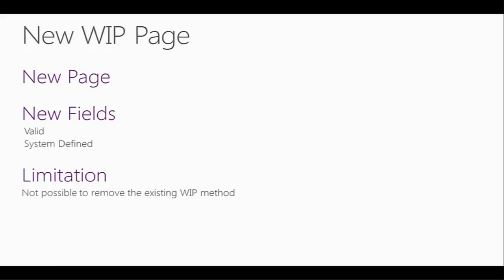New WIP page and new WIP method creation. In Dynamics NAV 2013, we have a new page. In this new page, the five WIP methods are already created. New fields have been added to this page. The most important fields are Valid and System Defined. As I said before, the five methods cannot be changed. You can only remove the checkmark in the Valid field. When you remove this checkmark, the user will not be able to use that specific method as a WIP method calculation.